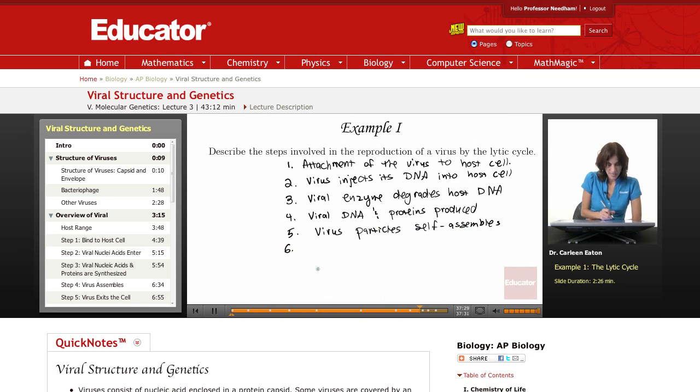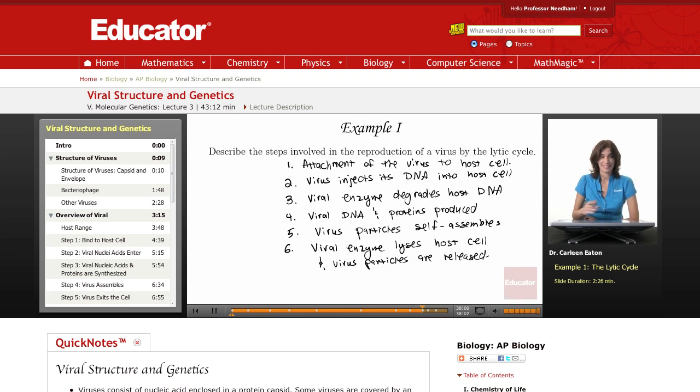And then a viral enzyme lyses the host cell and virus particles are released. These viral particles, the offspring of the original virus, are then free to infect another cell. So this is the lytic cycle.